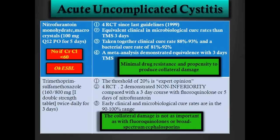Regarding Bactrim, resistance at UofL in our outpatients is 24%. This surveillance covered 312 patients in 2012, and the resistance rate is 24% — really high. So we should not use Bactrim empirically in our outpatients for UofL infections.